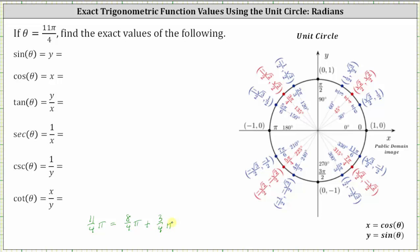Let's go ahead and sketch 11 fourths pi radians in standard position. The initial side is along the positive x-axis. One complete rotation in the counterclockwise direction would be two pi radians, or eight fourths pi radians. Then we have nine fourths pi radians, which is coterminal to pi over four radians. Then we have ten fourths pi radians, which is coterminal to pi halves radians. And finally, 11 fourths pi radians, which is coterminal to three fourths pi radians.